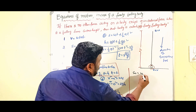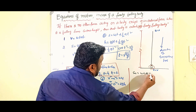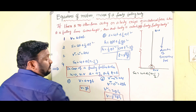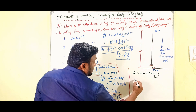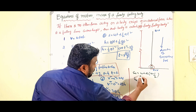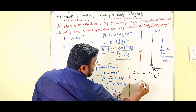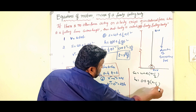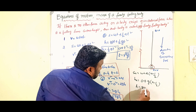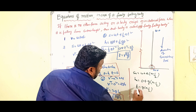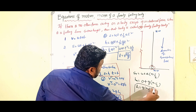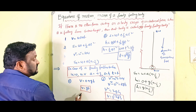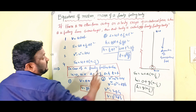Fourth equation: Sn equals u plus a times n minus half. Here u equals 0 and a equals g, so Sn becomes h equals g times n minus half. Therefore, h equals g of n minus half. This is the fourth equation.